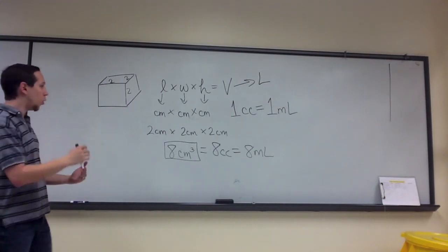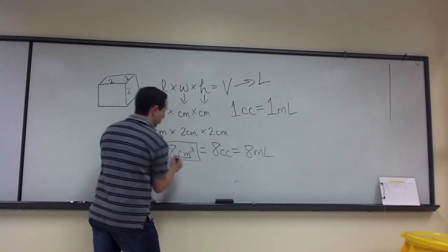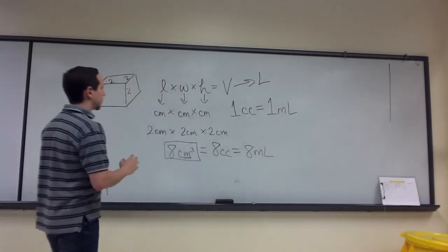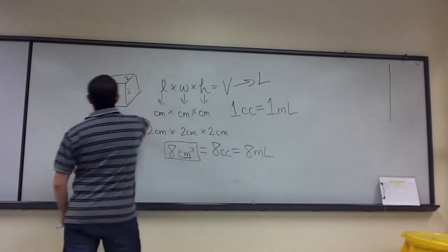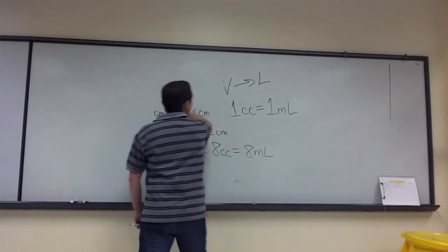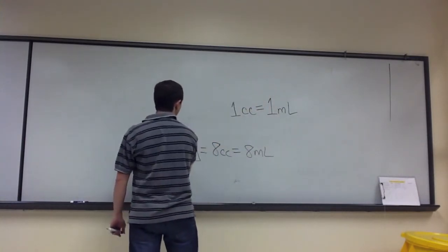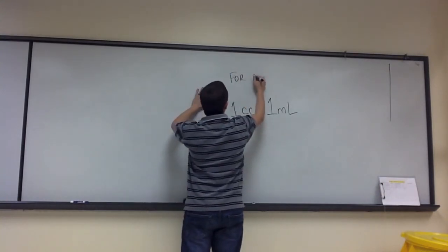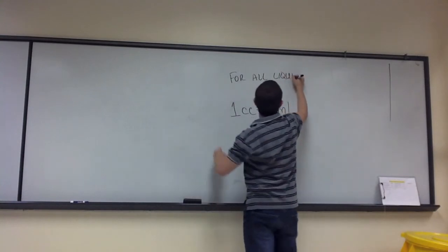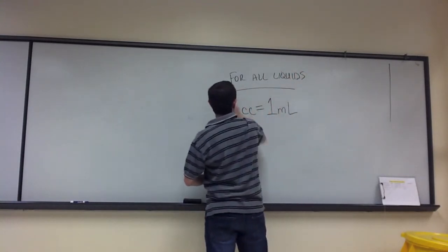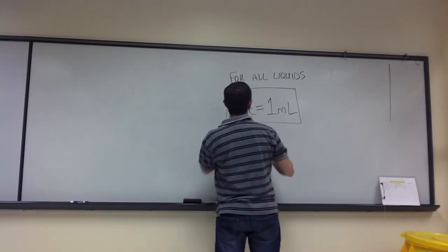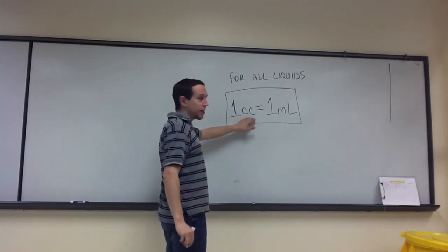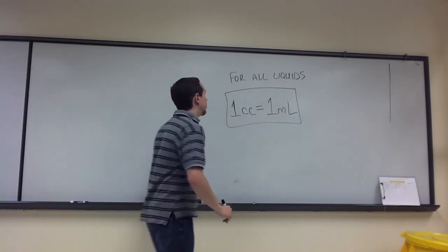So this is how we can correlate units that we had originally used to measure distance to units that we used to measure volume. Beyond that, there is one other interesting development. This is for all liquids. So no matter what liquid you're looking at, if you can find the amount of liquid in milliliters, you can convert that to cubic centimeters, and if you can find the amount in cubic centimeters, you can convert that to milliliters.